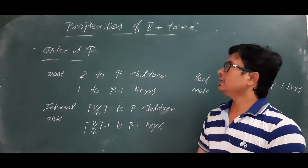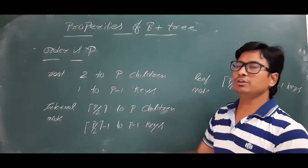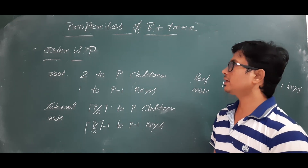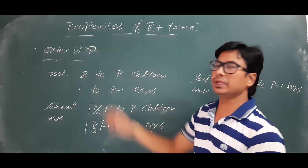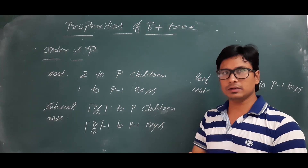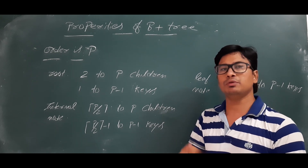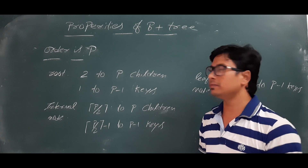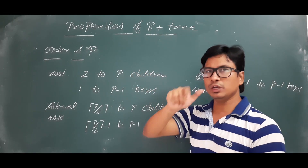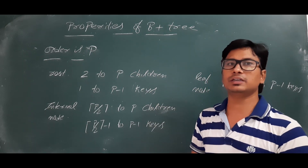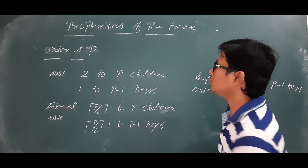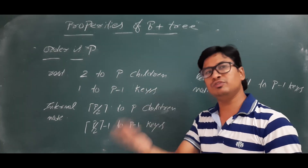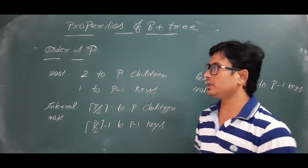Good morning students. In this video we will discuss about the properties of B+ trees. If they have given order p, in a B+ tree we have an order for internal nodes and an order for leaf nodes separately. If they have given only one order, then you should consider that the order of internal nodes is equal to p and the order of leaf nodes is also p.